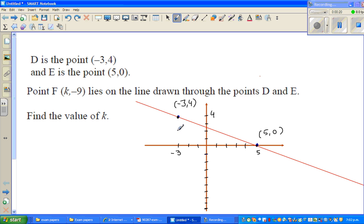So I have plotted it. This is not exactly on scale. This is negative 3, 4. And this is 5, 0. Now point F is k, negative 9. So this is negative 1 on the y-axis and this is negative 9. So the question is, you want to find the value of k.